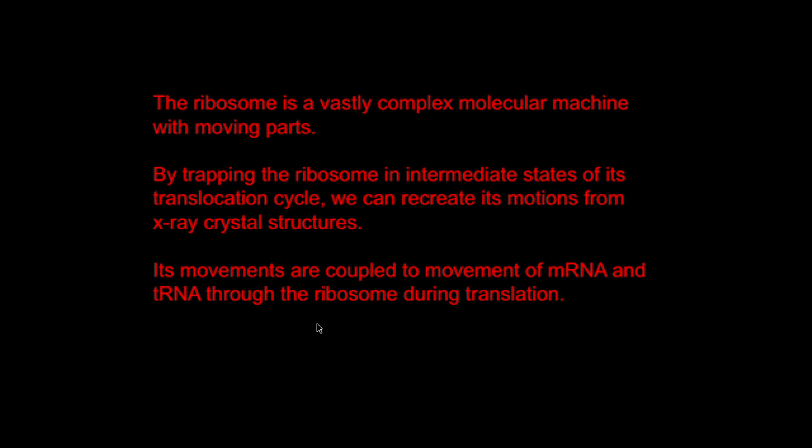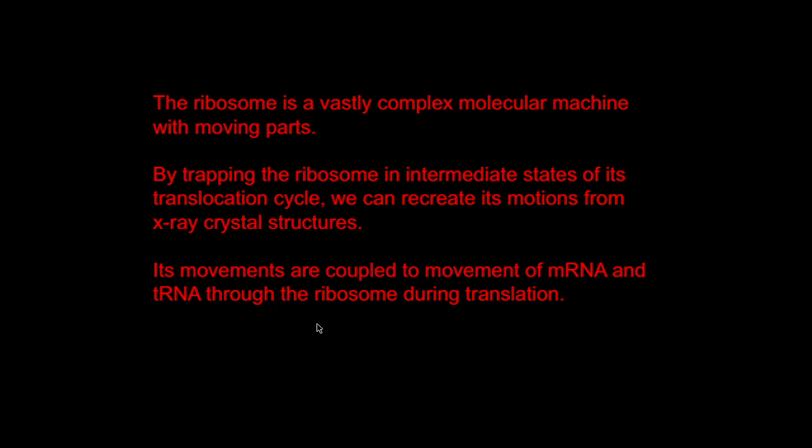The ribosome is a vastly complex molecular machine with moving parts. By trapping the ribosome in intermediate states of its translocation cycle, we can recreate its motions from frames consisting of individual crystal structures. We can see that the movements of the ribosome in these different states are coupled to the movement of the messenger RNA and the tRNAs through the ribosome.